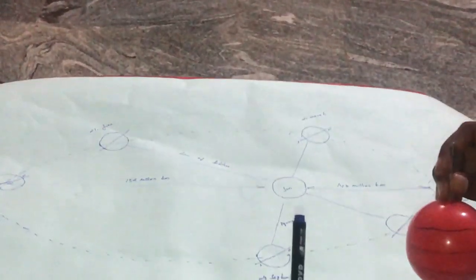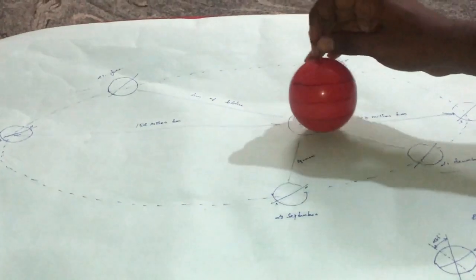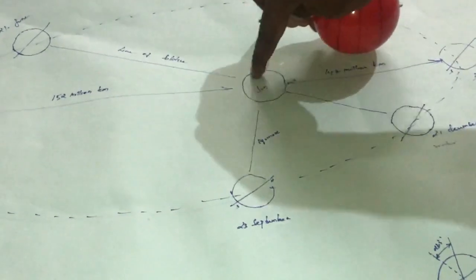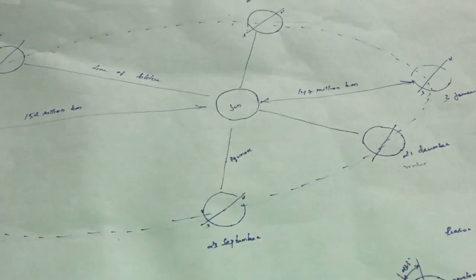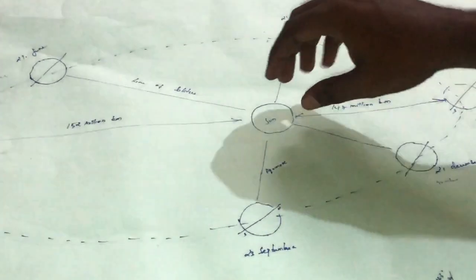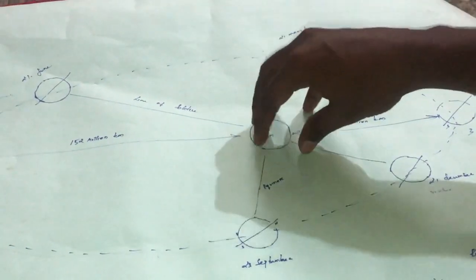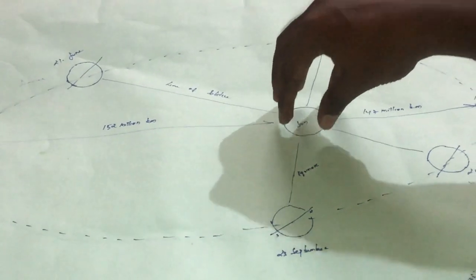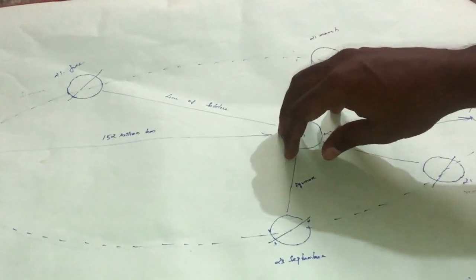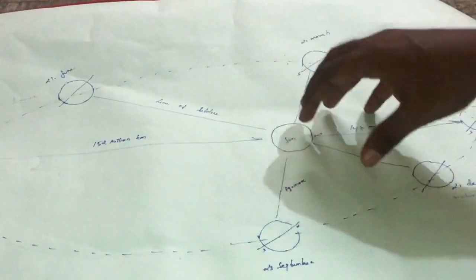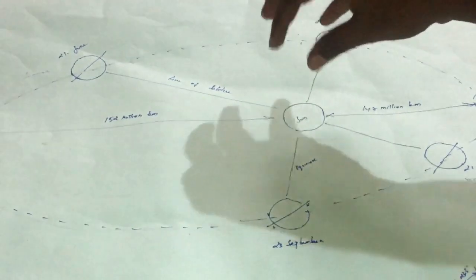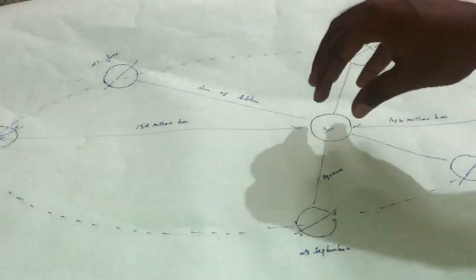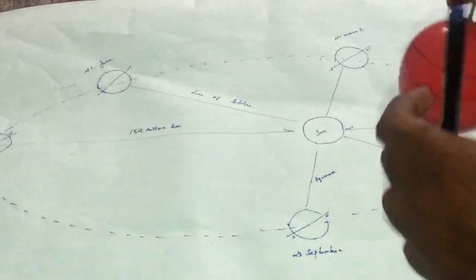The sun is a huge structure generating a huge amount of energy, and the energy given by the sun is constant — that is called the solar constant. The solar constant is a constant amount of energy given by the sun, which we will discuss in the next classes.